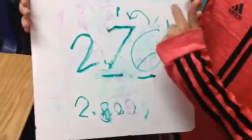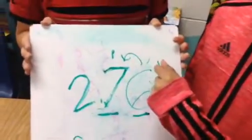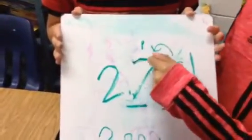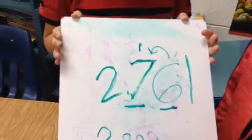Since it's higher than 5, 1 is going to go to 7 and it's going to make it 8. So then it's going to make it 2 and 800 thousandths.